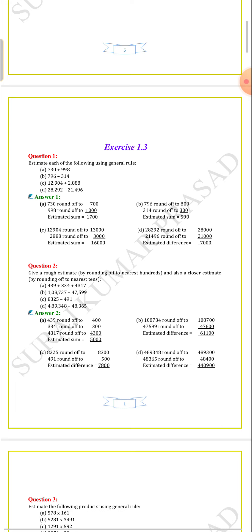Question number 1: Estimate each of the following using general rule. To solve this question, first we need to understand the definition of general rule and what is meant by estimation. The general rule is that we have to round off each number to its greatest place — it is used for rounding.